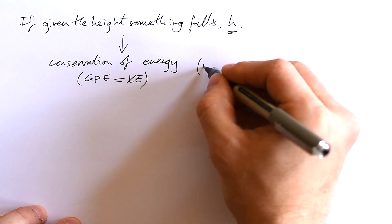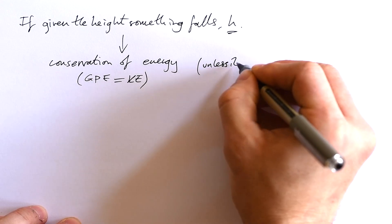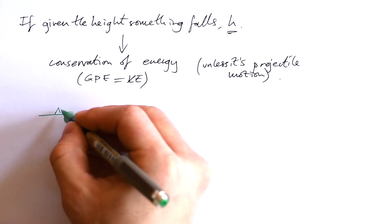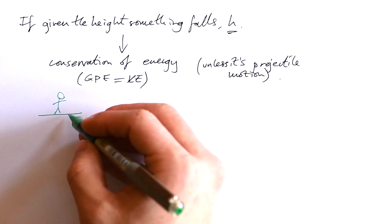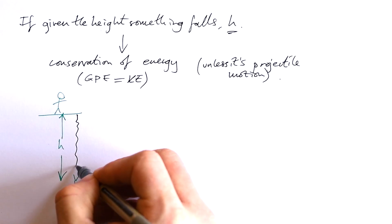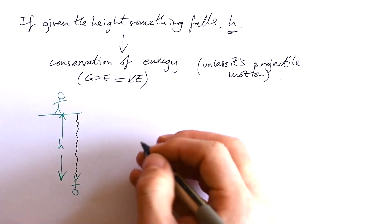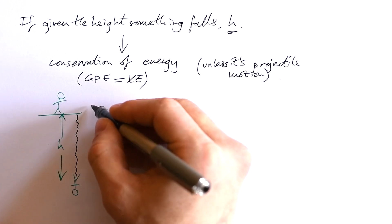And I'm going to put a little caveat in here: unless it's projectile motion. So if you have a bungee jumper here and you're told how far they drop before the bungee cord gets taut, first of all you might be asked to find out what is the GPE.